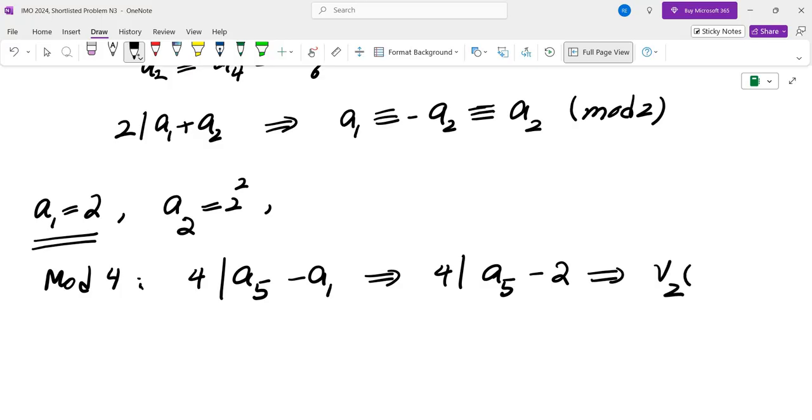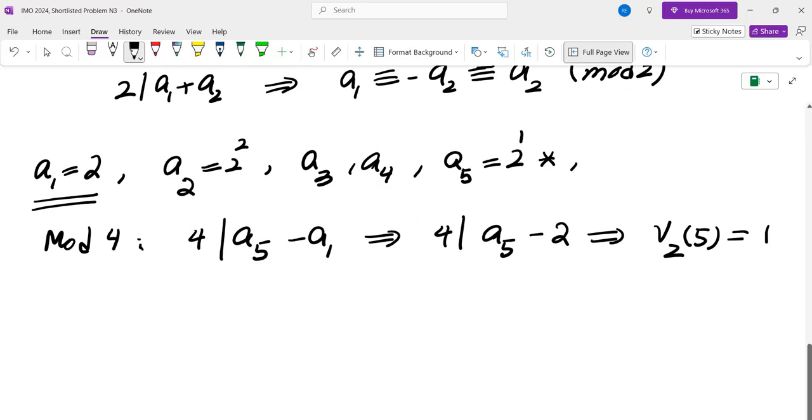So that tells us that 4 divides A5 minus 2. So this means V2 of A5 is in fact 1. In other words, if you look at the sequence, we have A3, we have A4, and we have A5. A5 is 2 to the 1st. And if I want to understand the powers of 2 using A2, I'll have to take it mod 8.